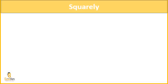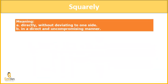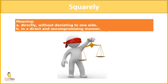Our next word is 'squarely.' Squarely means unbiased. If I am not taking either side and I am just giving a fair decision, that is called squarely. The meaning is: directly, without deviating to one side, in a direct and uncompromising manner. For example, we want our justice system to be squarely on the basis of the evidence given — just giving a fair decision.